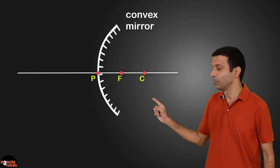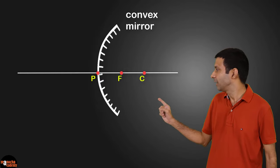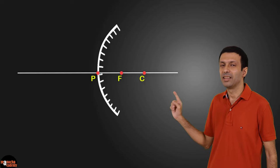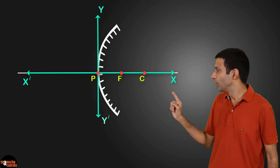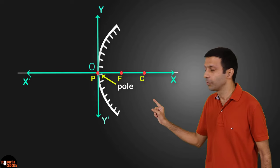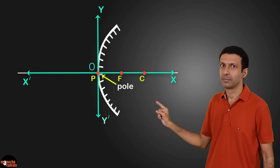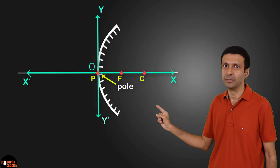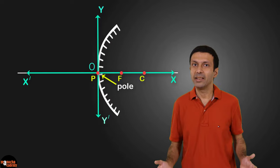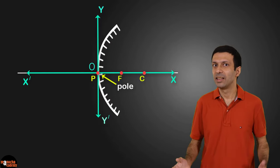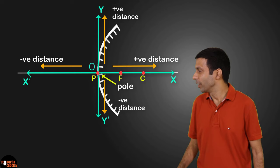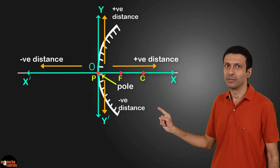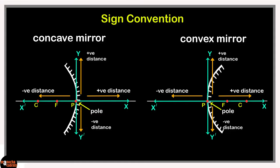Similarly for the convex mirror, imagine you are placing the coordinate axis — the X and Y axis — with the origin at the pole of the convex mirror, and the X axis along the principal axis as shown here. Once again, when we measure the distances and heights, they have a sign according to the sign convention. Let's place the sign convention for concave and convex mirrors on our concept board.